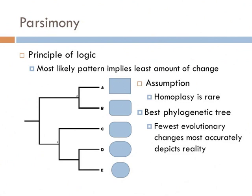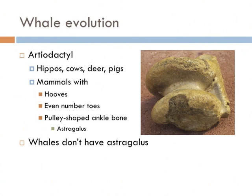Most phylogenies are constructed using what is known as parsimony. Parsimony is a principle of logic that suggests the pattern with the least amount of change is the most likely one. When constructing phylogenies, parsimony assumes evolution is, in essence, lazy — it takes the easy road. Here we have several shapes. The principle of parsimony would create a phylogenetic tree where shapes that require the least amount of change to go from one to another are more likely closely related. The assumption of parsimony is that homoplasy is rare. Next we'll see an example where parsimony and the cladistics approach don't provide an accurate depiction of reality.